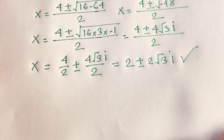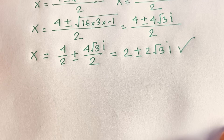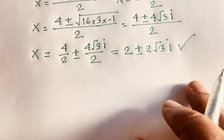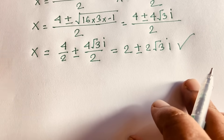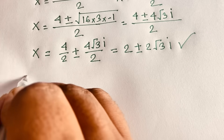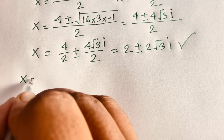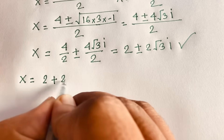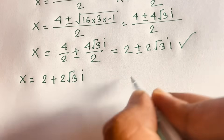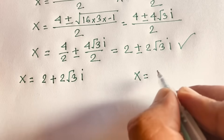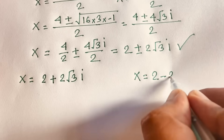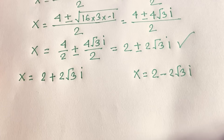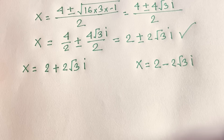So we have two complex solutions: x equals 2 plus 2√3i, and x equals 2 minus 2√3i.